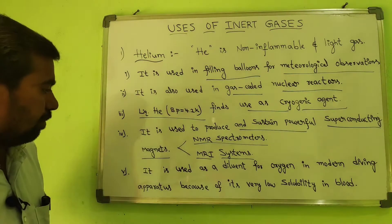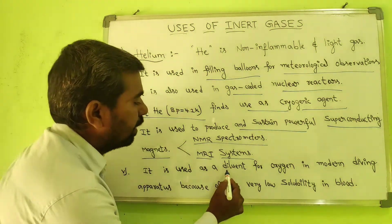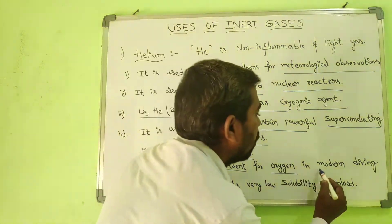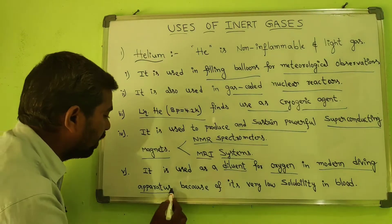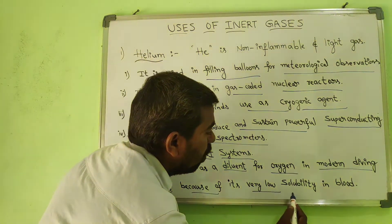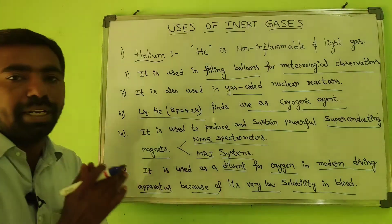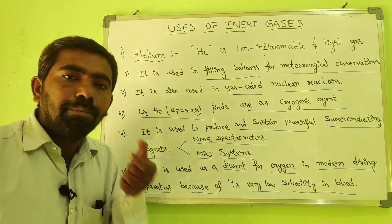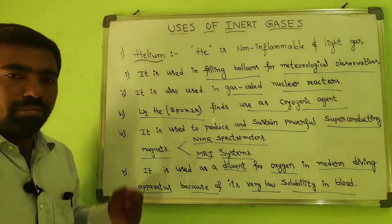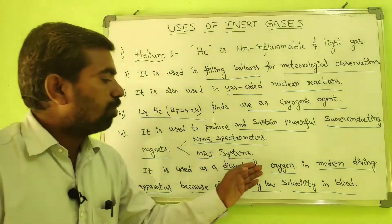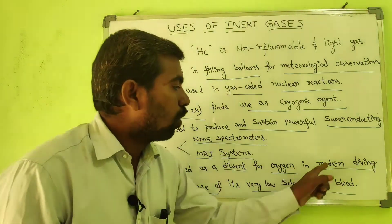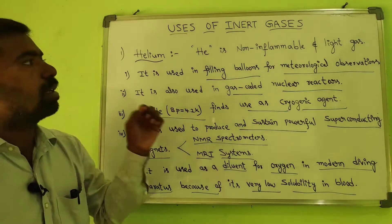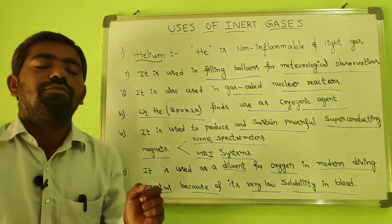Helium is used as a diluent for oxygen in modern diving apparatus. Due to its very low solubility in the blood, helium is preferred as a diluent for oxygen in modern diving. These are some of the uses of helium, the first element of the 18th group.